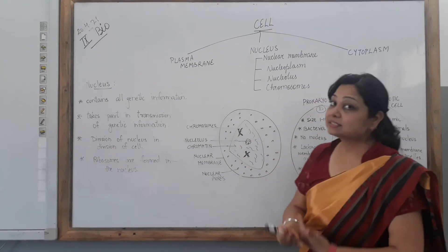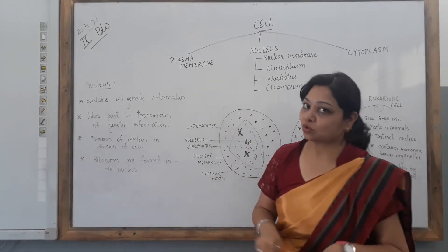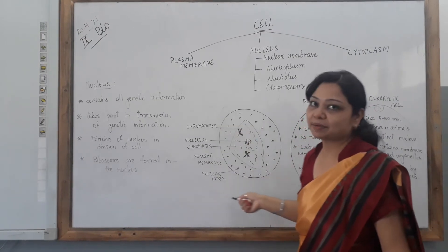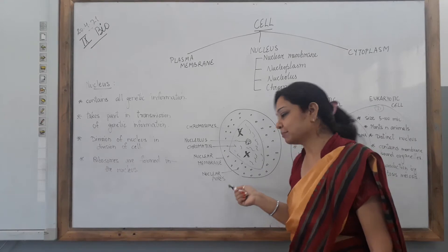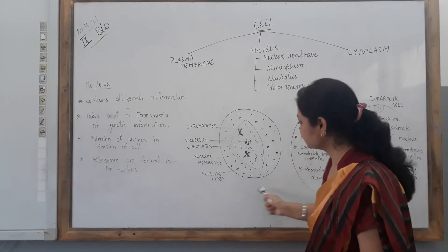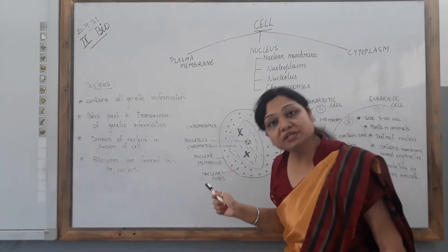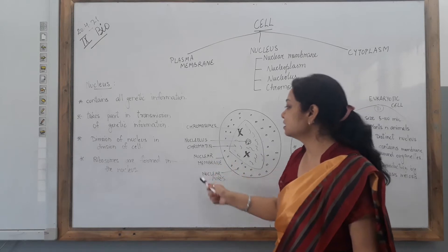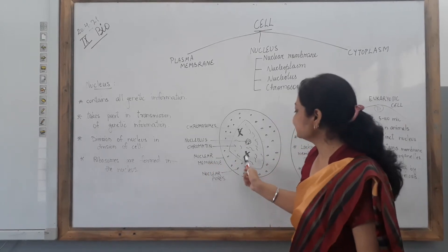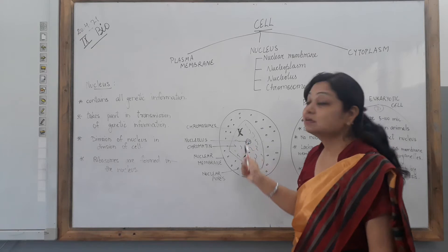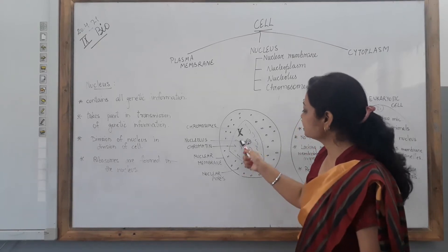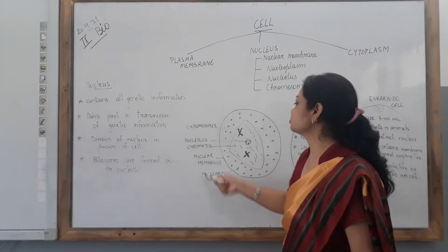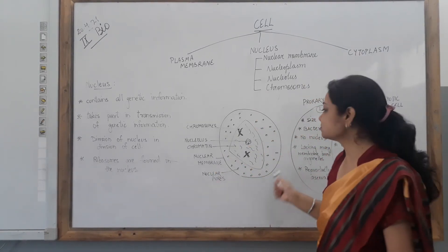Just as the cell has an outer membrane called the cell membrane or plasma membrane, same way in the nucleus this outer membrane is called the nuclear membrane. The small holes you can see here are the nuclear pores. The thread-like structures are the chromatin. The X-shaped rods are the chromosomes. And the granular structure in the centre is the nucleolus. Now, coming on to the basic features and functions of the nucleus.